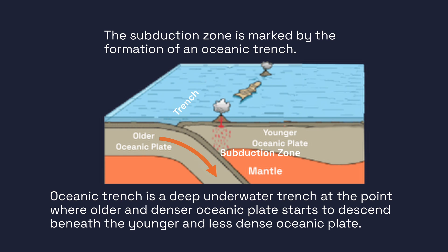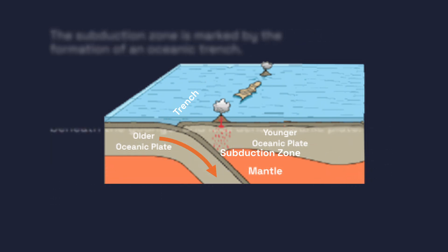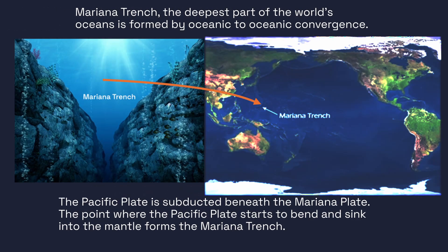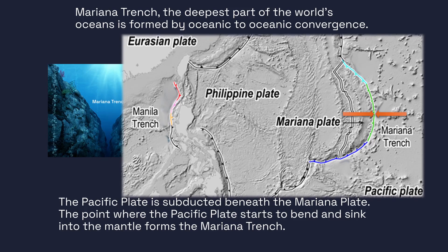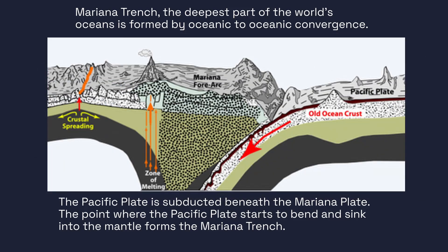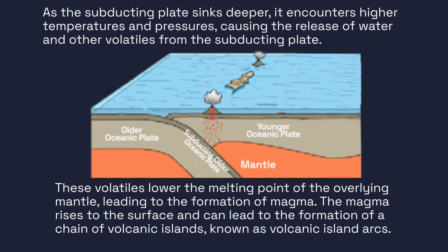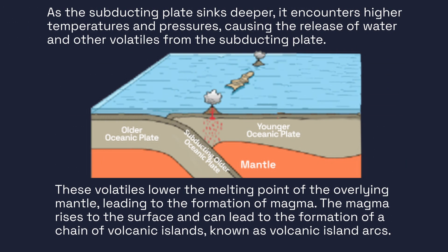The subduction zone is marked by the formation of an oceanic trench — a deep underwater trench at the point where the denser oceanic plate begins to descend beneath the younger oceanic plate. The Mariana Trench, the deepest part of the world's oceans, is formed by this type of convergent plate boundary. The Pacific plate is being subducted beneath the smaller Mariana plate, and the point where the Pacific plate bends and sinks into the mantle forms the deep, narrow Mariana Trench.